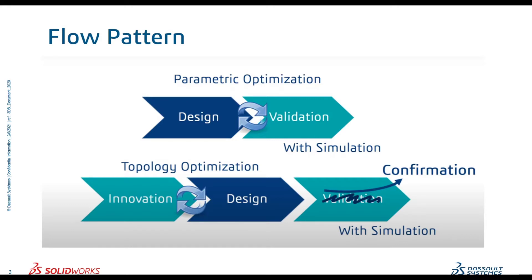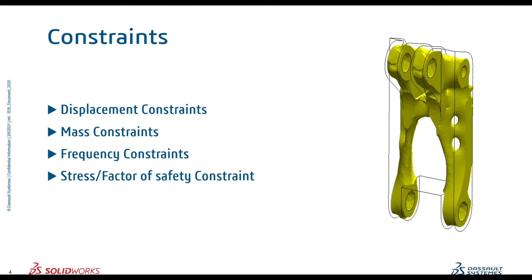The normal flow pattern for design and validation deals with simulation, but if we consider topology optimization it goes: innovation, then design, then confirmation — skipping the traditional validation step. For topology analysis, the key constraints we use during the optimization study are displacement constraints, mass constraints, frequency constraints, and factor of safety or stress constraints.